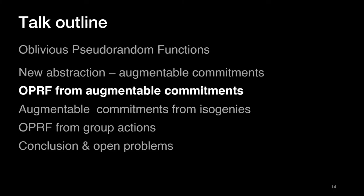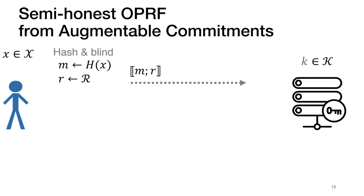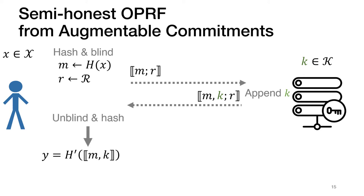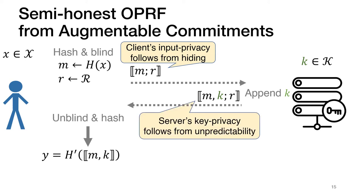We will now see how to construct an oblivious PRF from augmentable commitments. The client takes its PRF input x and hashes it into an element m in one of the input spaces. It then creates a blinded augmentable commitment to m using randomness r and sends it to the server. The server appends its secret key k and sends the result back. Finally, the client unblinds the response and hashes it to obtain the PRF output y. The hiding property protects the client's input privacy, while one-more unpredictability ensures the client learns the PRF value only at a single point.